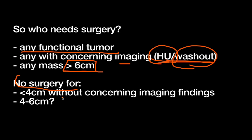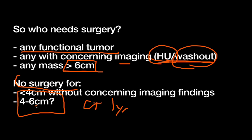Who doesn't need surgery? Patients with a lesion less than four centimeters without concerning imaging findings — regarding Hounsfield units and washout. However, if you don't offer surgery, you do want to follow these up closely, usually with a repeat CT adrenal protocol in one year to look for interval growth. If it grows more than a centimeter or develops concerning features, then you would want to take it out. Four to six centimeters is a gray area, case-by-case. If there are no concerning features and somebody is young, healthy, with a good life expectancy who would tolerate surgery, usually you're going to take that out — but in certain high-risk patients, you might not.